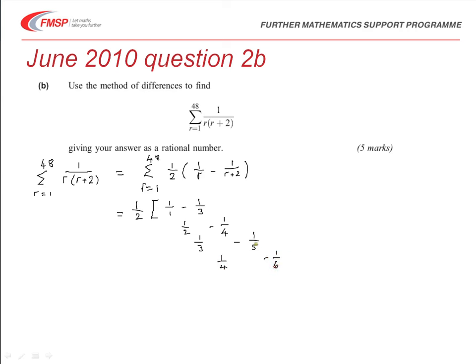So, now you can begin to see how the terms are cancelling each other out as we go through, and this will continue right to the very end. So, if we think about the last line, when r is 48, we know that one is going to be 1 over 48, minus 1 over 50.